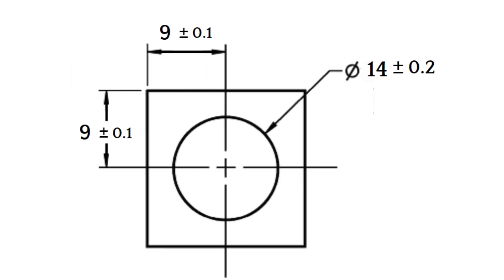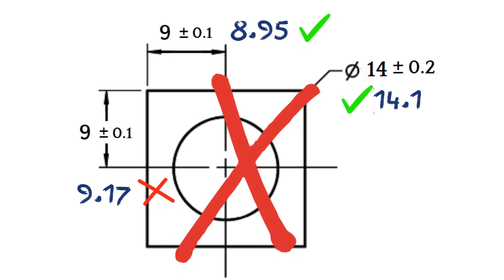In the conventional method, the position of the 14mm bore should be between 8.9 and 9.1 on both x and y axes. Suppose we measure the part and got distances of 9.17 and 8.95 with a bore diameter of 14.1. In this case, the part would be non-conforming because 9.17 is larger than 9.1.